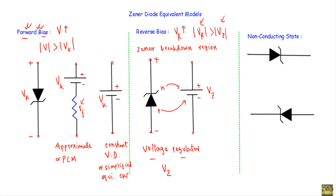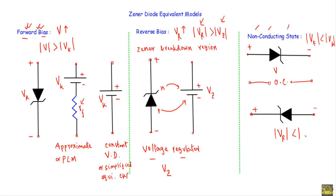If we apply a forward voltage across the Zener diode and the magnitude of that forward voltage is less than the built-in potential, the Zener diode will not conduct any current — it will be in the non-conducting state, so we replace it with an open circuit. Similarly in reverse bias, as long as the reverse voltage Vz is less than the Zener voltage, the Zener diode will not conduct and will also be in the non-conducting state, replaced by an open circuit.